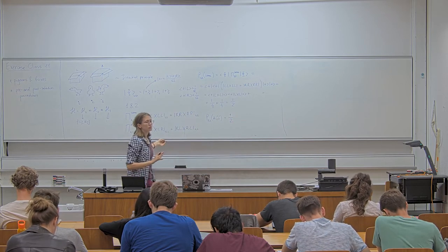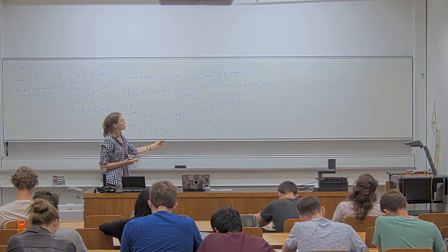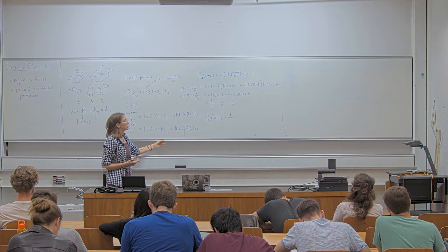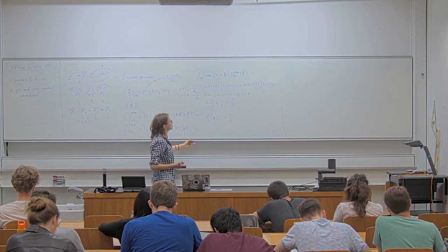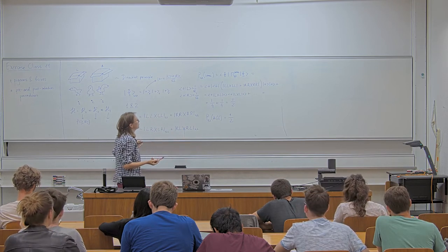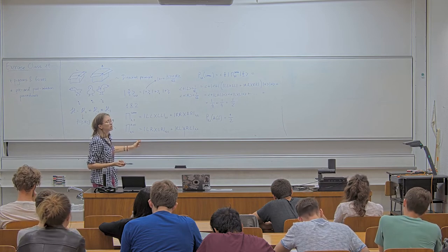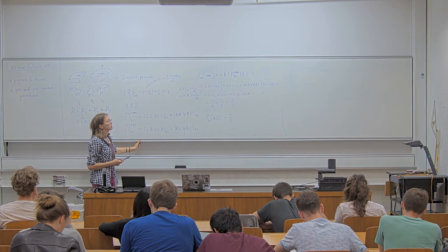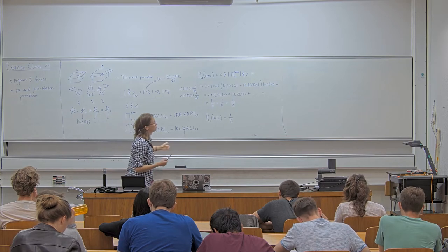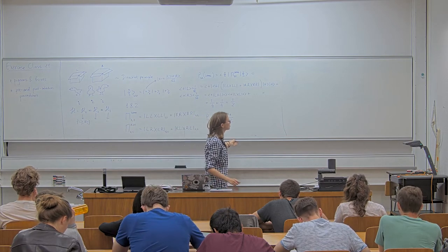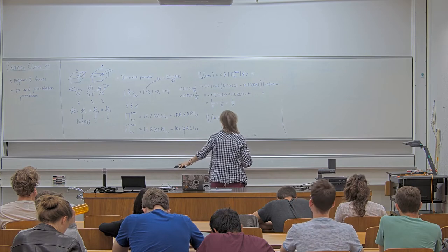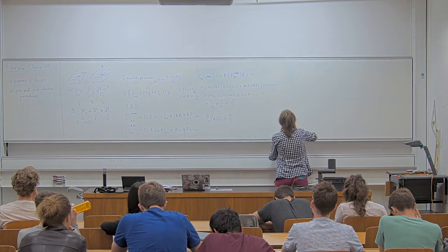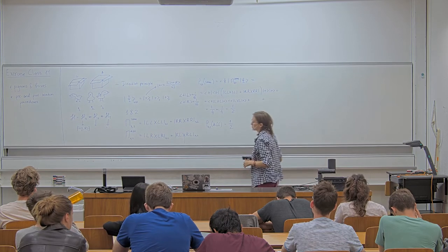Right now there is no contradiction because all these statements are probabilistic. Particles 1 and 2 with probability one-half can be in the same box, or with the same probability in different boxes. This applies to any pair of the particles chosen from these three, because all the states are symmetric with respect to each other — you can always permute the systems.